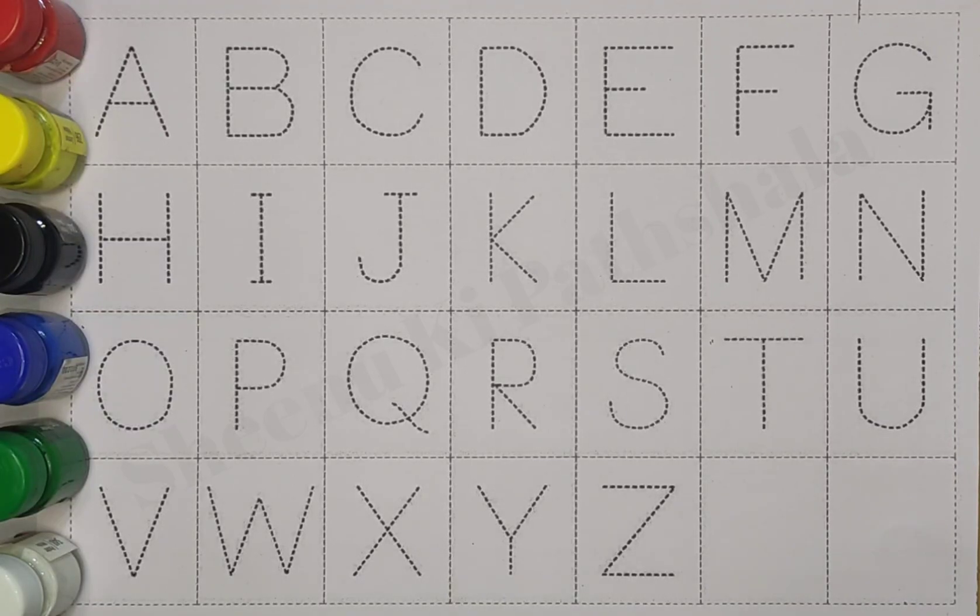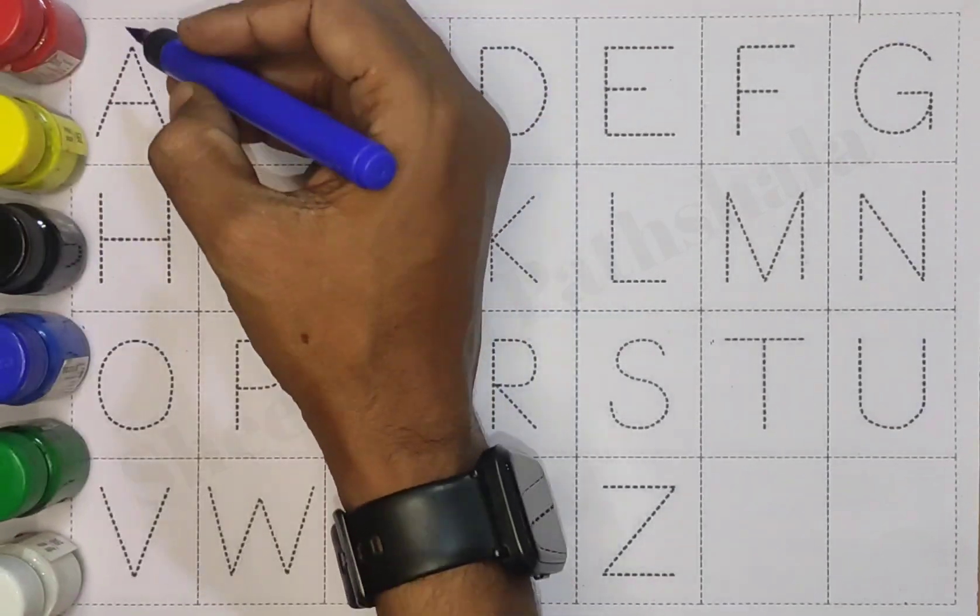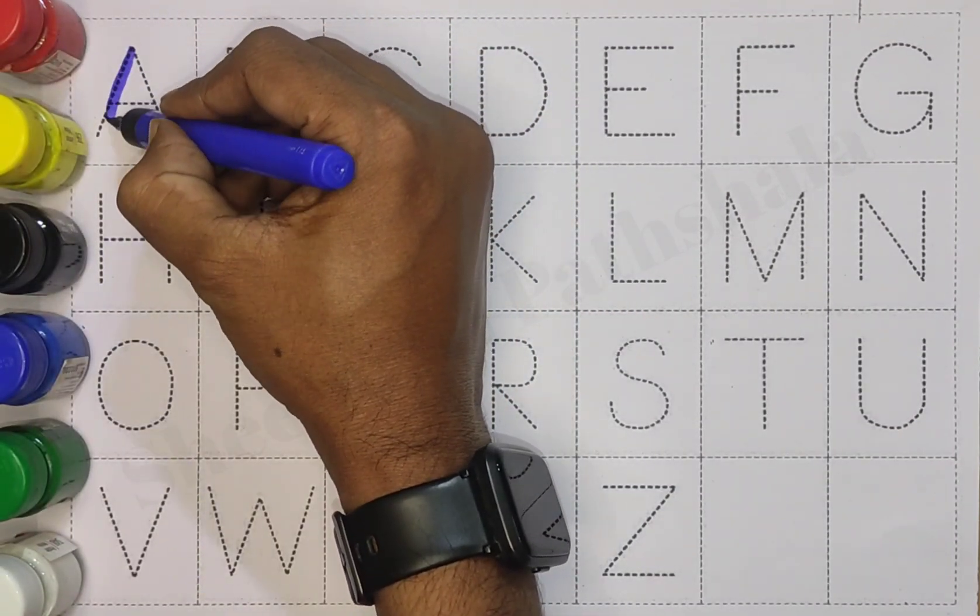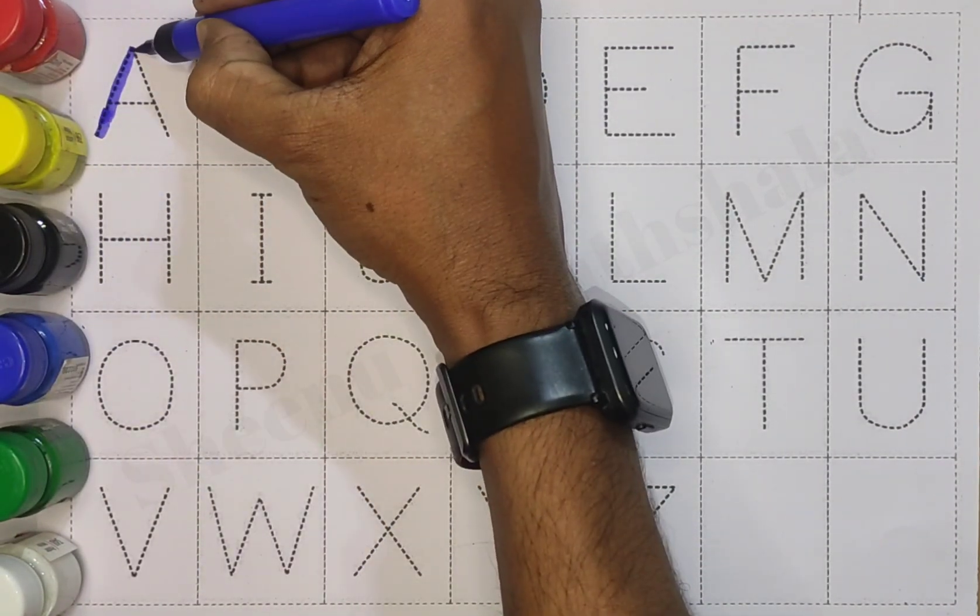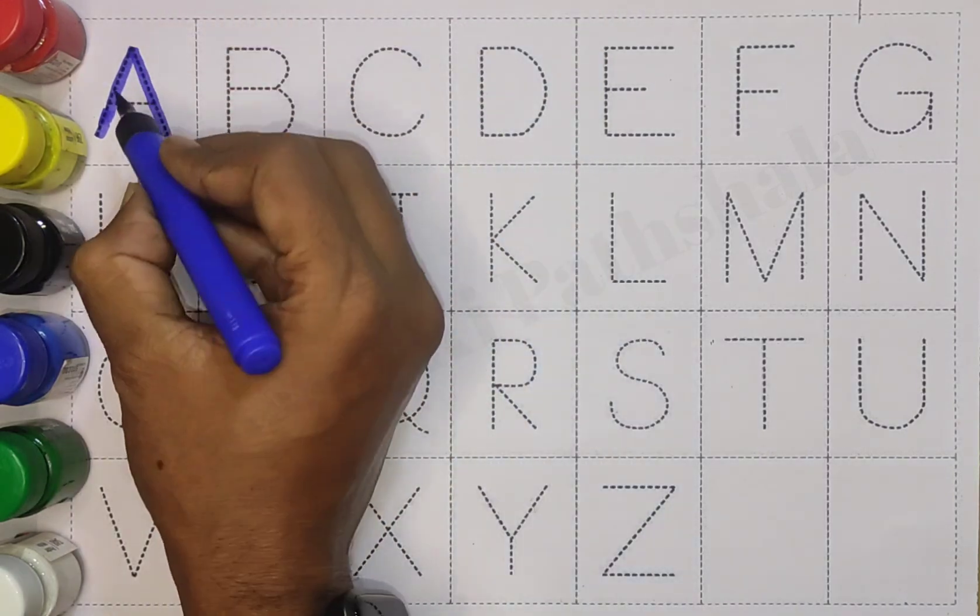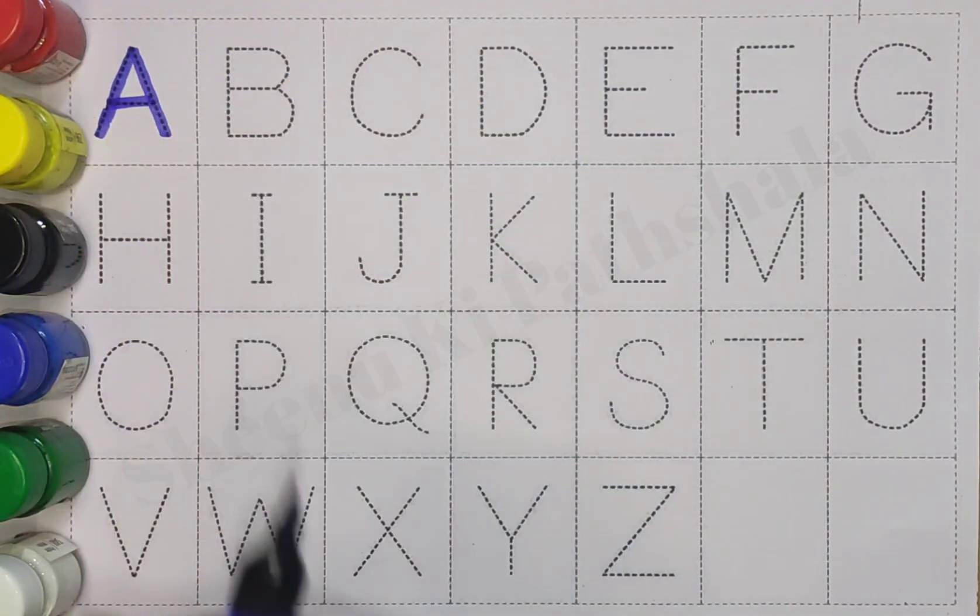A, B, C, D in capital letters. Let's start. Blue color. A for apple.